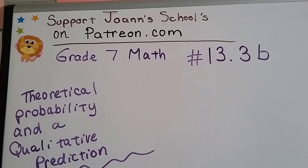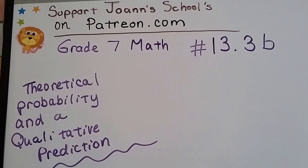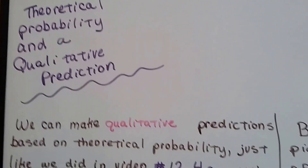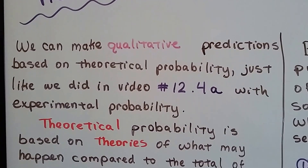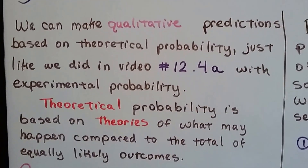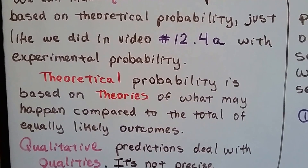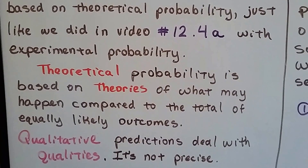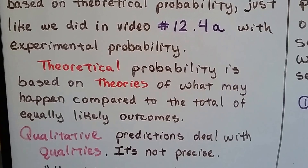Grade 7 math number 13.3b: Theoretical Probability and a Qualitative Prediction. We can make a qualitative prediction based on theoretical probability, just like we did in video 12.4a with experimental probability.